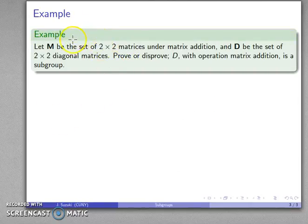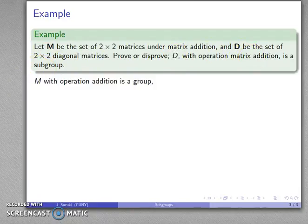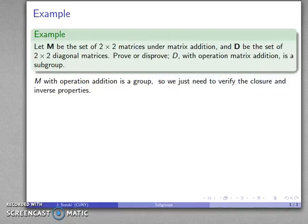For example, let's take the set of 2×2 matrices under matrix addition, and let D be the set of 2×2 diagonal matrices. Let's prove or disprove: D with the operation of addition is going to be a subgroup. M with the operation of addition is a group, so we just need to verify the closure and inverse properties for D.